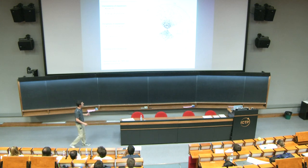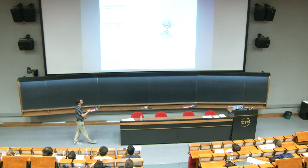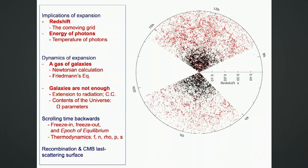I finished the previous lecture discussing the gas of galaxies. This gas is consistent with being spatially homogeneous and isotropic. Spatially homogeneous means that if you take a slice in time — in universe time — then wherever you walk around in the universe in this gas of galaxies, you see the same concentration, the same physical properties. A slice in time means, in a plot like that, a slice in redshift.